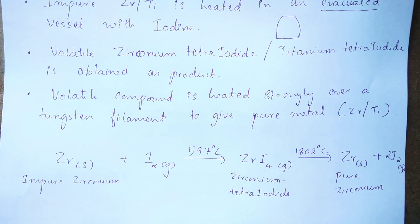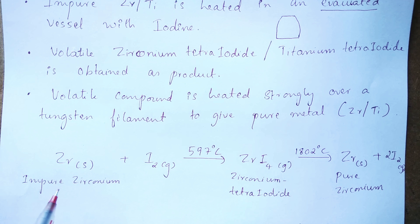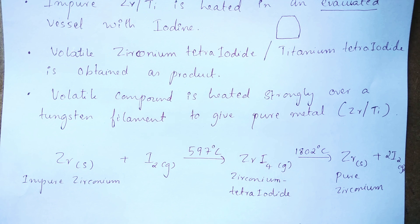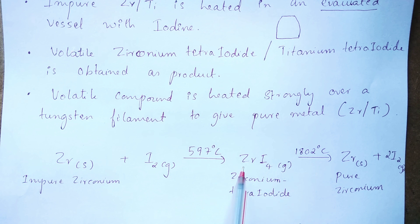To purify zirconium: impure zirconium solid is heated with iodine gas in an evacuated vessel at a temperature of 597 degree Celsius, producing volatile zirconium tetra iodide, ZrI₄, as a gas.